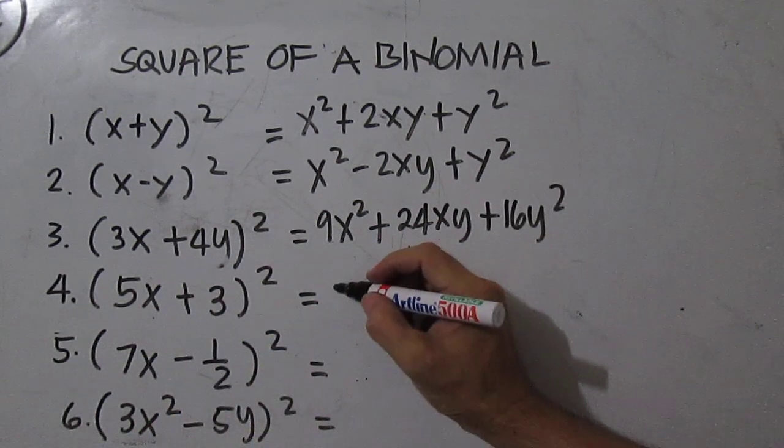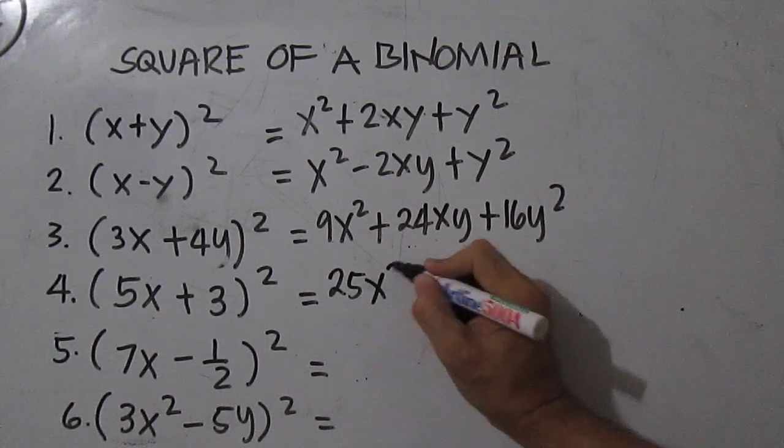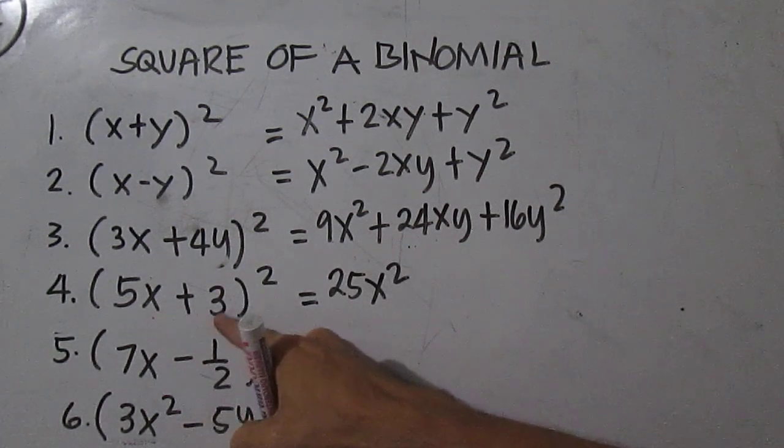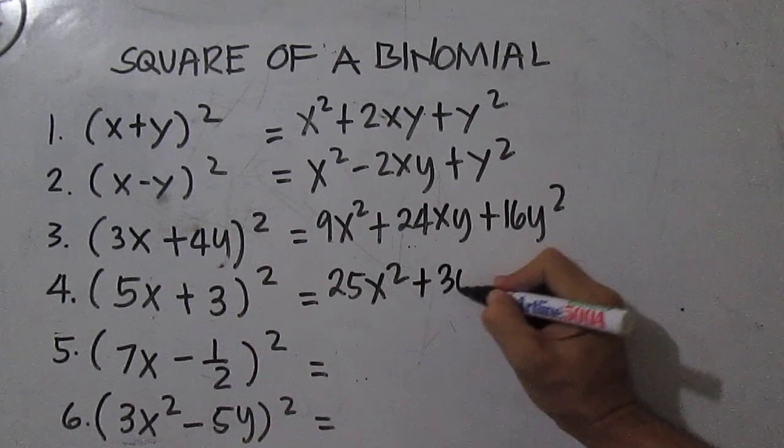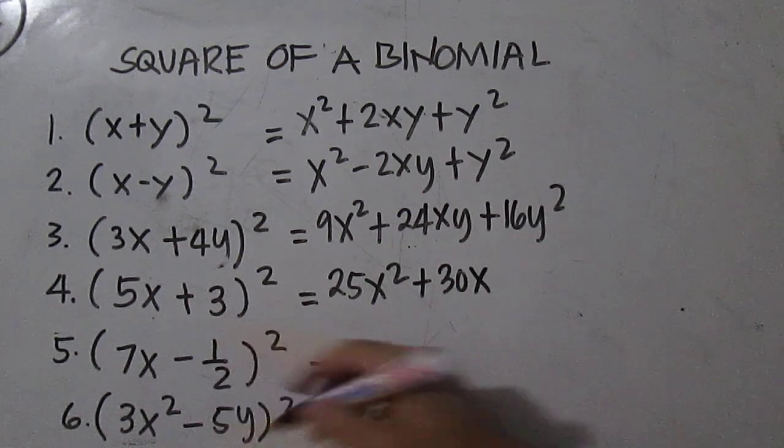5x times 5x is 25x squared, then 5x times 3 is 15x, times 2 you have 30x. Then 3 times 3 is 9.